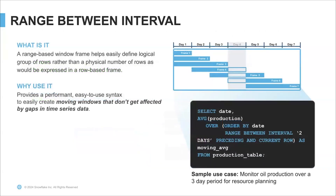The next feature we recently introduced is range between. When working with time series datasets, you'll run into scenarios where there are gaps in your data — for example, in the stock world, a non-trading day or a holiday with no data. But you want your analytics to understand that gap and produce the right results. For example, moving statistics, moving averages, and moving sums all need to account for these gaps. All you need to do is specify your interval using range between intervals — for example, two days preceding and current row — to calculate moving averages or moving sums over that three-day period.